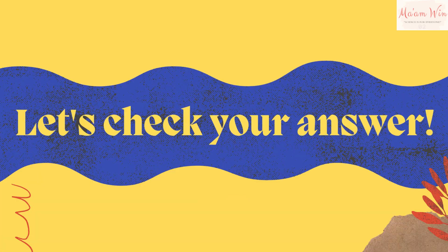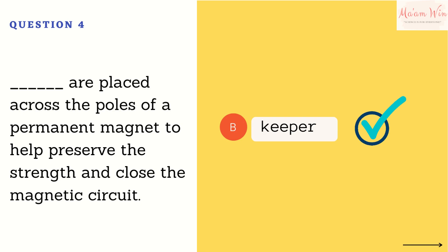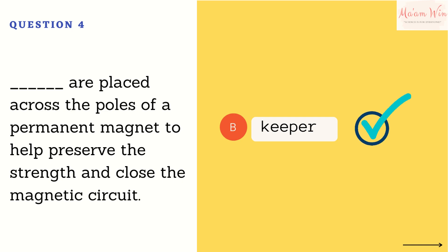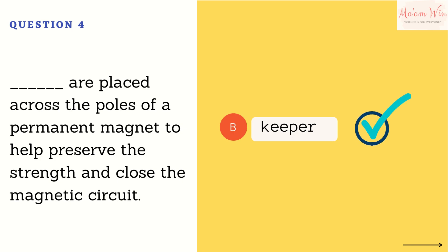Let's check your answer. The right answer is letter B. A magnet keeper is a bar made from iron or steel. It is placed across the poles of the permanent magnet to help preserve the strength and close the magnetic circuit, which stops any external metal from being attracted to the magnet.